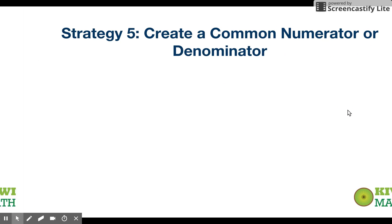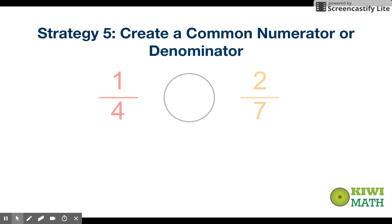The next strategy is for when all other strategies aren't possible. For example, one-fourth and two-sevenths: they don't have the same numerator, same denominator, they're not both missing a piece, and they're both less than a half — so benchmarks wouldn't help here. The strategy is to create a common numerator or denominator. I have a detailed video on creating common denominators if you're unfamiliar with that process.